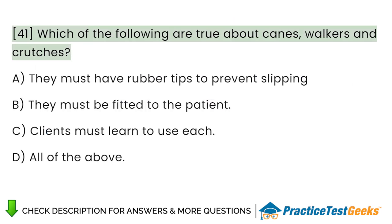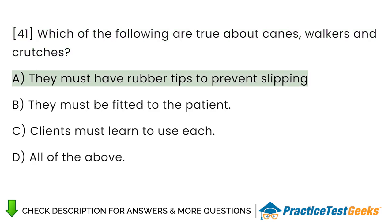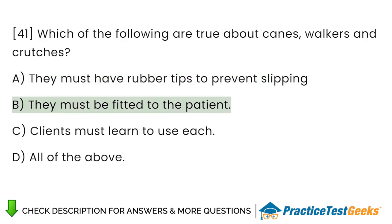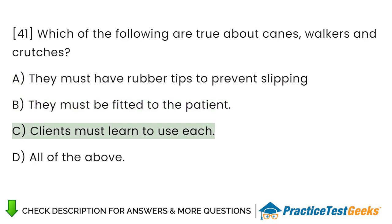Which of the following are true about canes, walkers, and crutches? A. They must have rubber tips to prevent slipping. B. They must be fitted to the patient. C. Clients must learn to use each. D. All of the above.